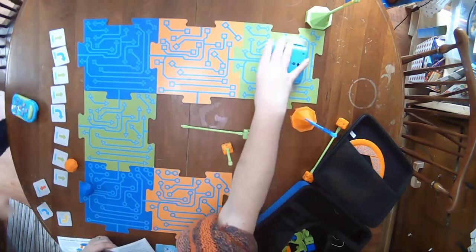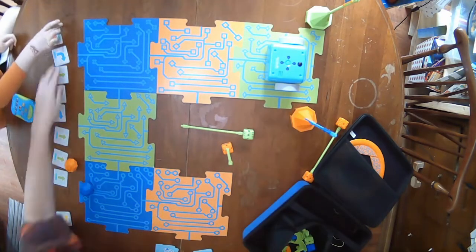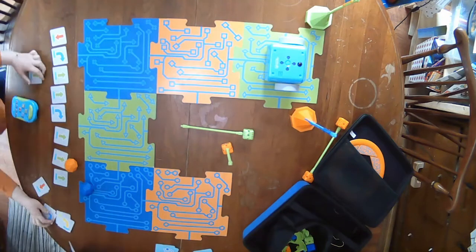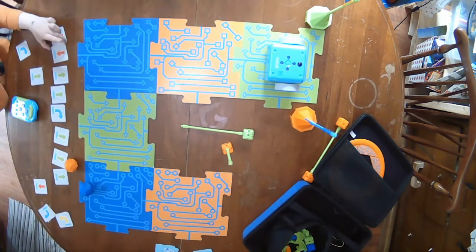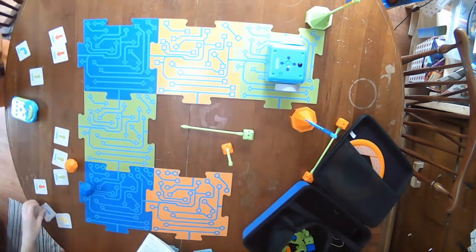Now let's see if we can get Botly to do the path backwards. First we'll use the cards to figure out the best code line.